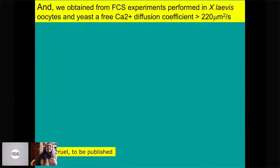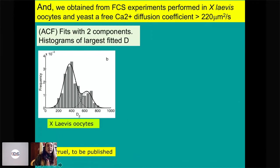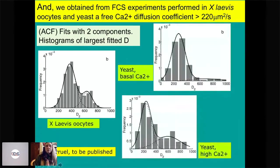Regarding calcium, with Cecilia we've been doing FCS — fluorescence correlation spectroscopy — experiments in Xenopus oocytes and in yeast, to determine the diffusion coefficient. In FCS, you take the autocorrelation function and fit it with different components. When we fit with two components, the largest diffusion coefficient component in oocytes looked bimodal, with values around 300 to 400 micron square per second. In yeast, a little bit smaller.